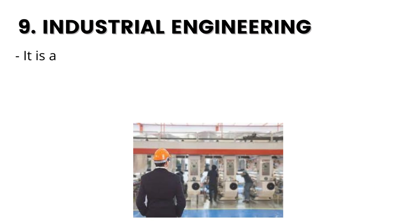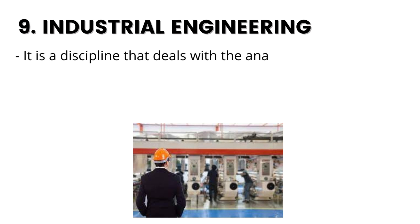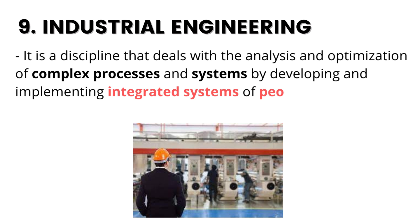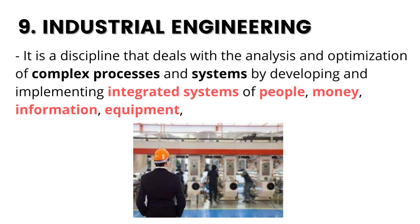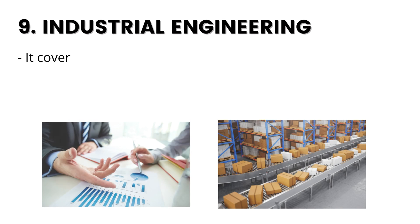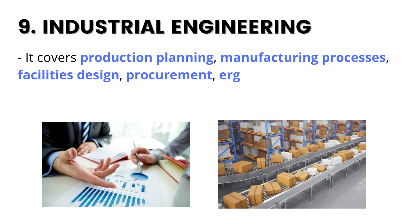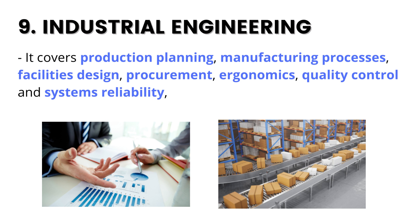9. Industrial Engineering. It is a discipline that deals with the analysis and optimization of complex processes and systems by developing and implementing integrated systems of people, money, knowledge, information, equipment, energy and materials. It covers production planning, manufacturing processes, facilities design, procurement, ergonomics, quality control and systems reliability, etc.